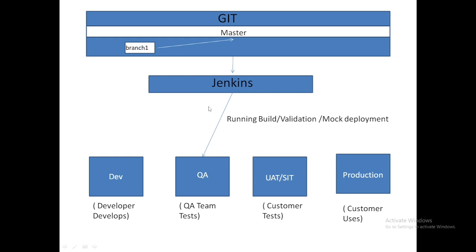To do this, you provide Branch 1 to Jenkins. Before the actual deployment, Jenkins does a mock deployment — also called validation or running the build. Your tech lead might ask you to run the build in Jenkins or do a validation. It is simply a test deployment: a false deployment just to check whether, when you do the actual deployment, it will fail or not and what issues you might get. It is much better to do a false deployment first and find any issues without hampering the code.